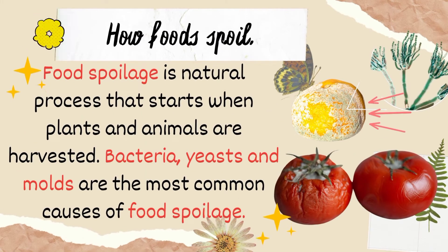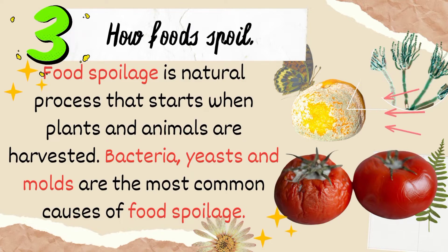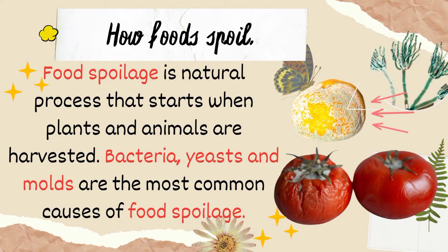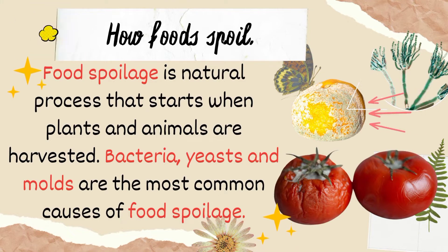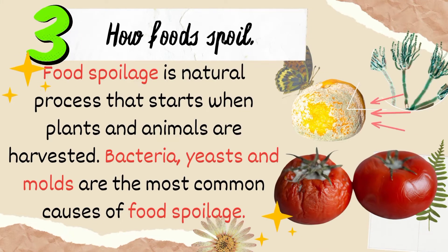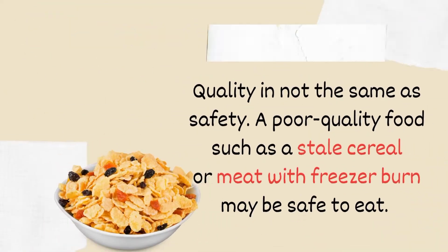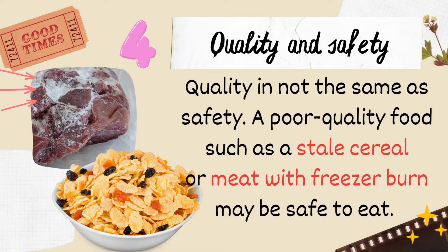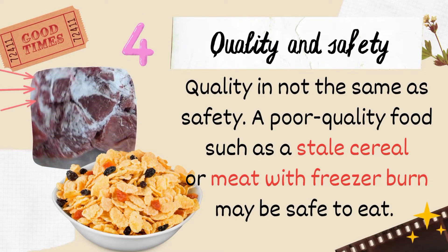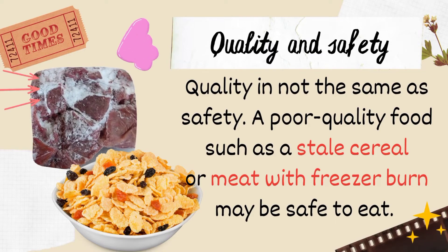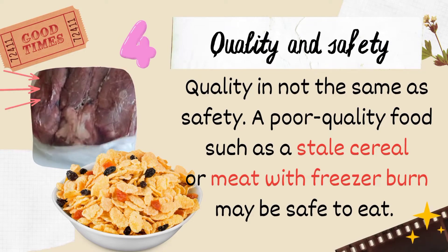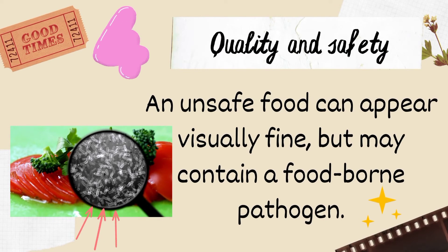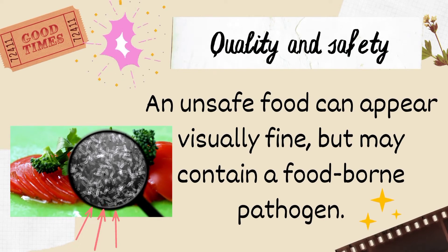How foods spoil: Food spoilage is a natural process that starts when plants and animals are harvested. Bacteria, yeasts and molds are the most common causes of food spoilage. Quality and safety: Quality is not the same as safety. A poor quality food, such as stale cereal or meat with freezer burn, may be safe to eat. An unsafe food can appear visually fine but may contain a foodborne pathogen.